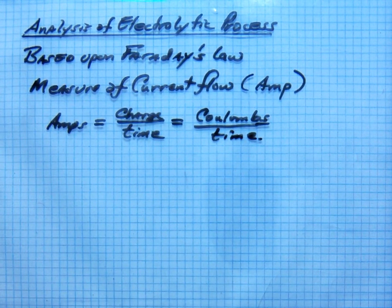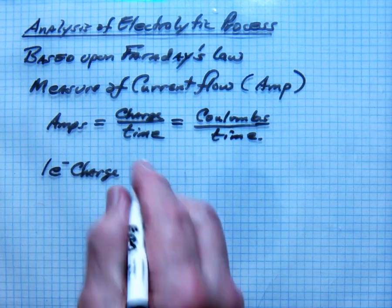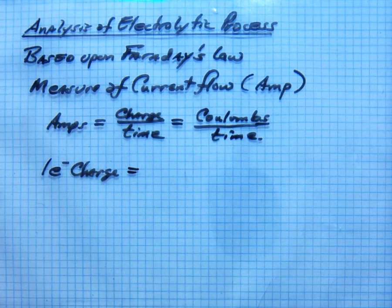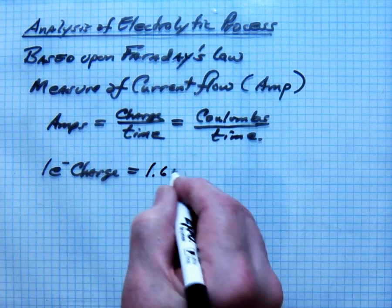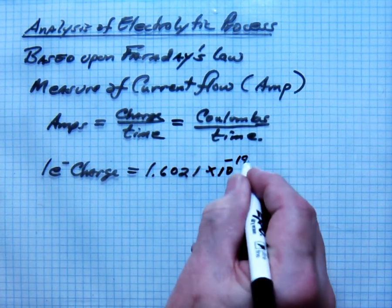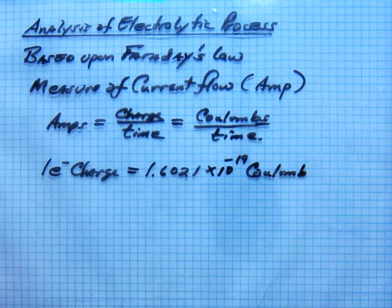A Coulomb represents a certain charge, specifically 1.6021 times 10 to the minus 19th of Coulomb. So what?